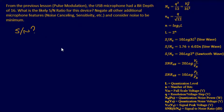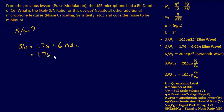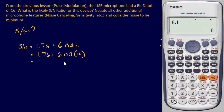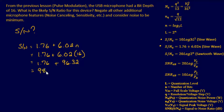Since we have a microphone, we're going to assume sine waves, so we'll use one of those two equations. Using the second one: signal-to-noise ratio equals 1.76 plus 6.02 times N, where N equals 16. That gives us 1.76 plus 6.02 times 16, which calculates to 96.32 plus 1.76, giving us a grand total of 98.08 decibels.